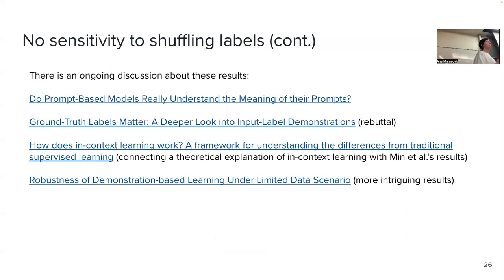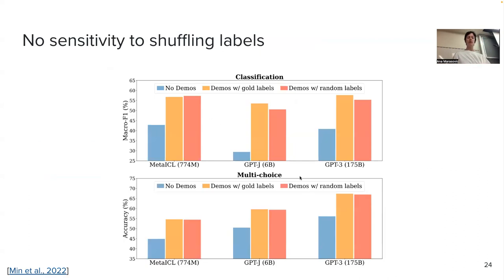What if we introduce a third classification label like neutral? They have various tasks including multiple choice question answering with usually four choices, and you can see it doesn't matter that much either — the label insensitivity holds across task types.